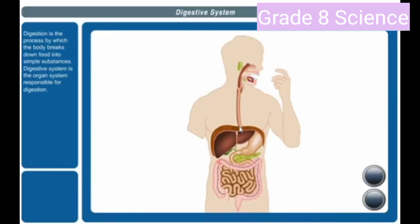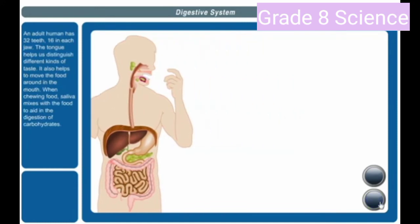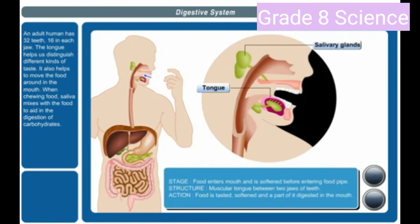Digestive system: digestion is the process by which the body breaks down food into simple substances. The digestive system is the organ system responsible for digestion. An adult human has 32 teeth, 16 in each jaw. The tongue helps us distinguish different kinds of taste and also helps to move the food around in the mouth when chewing.